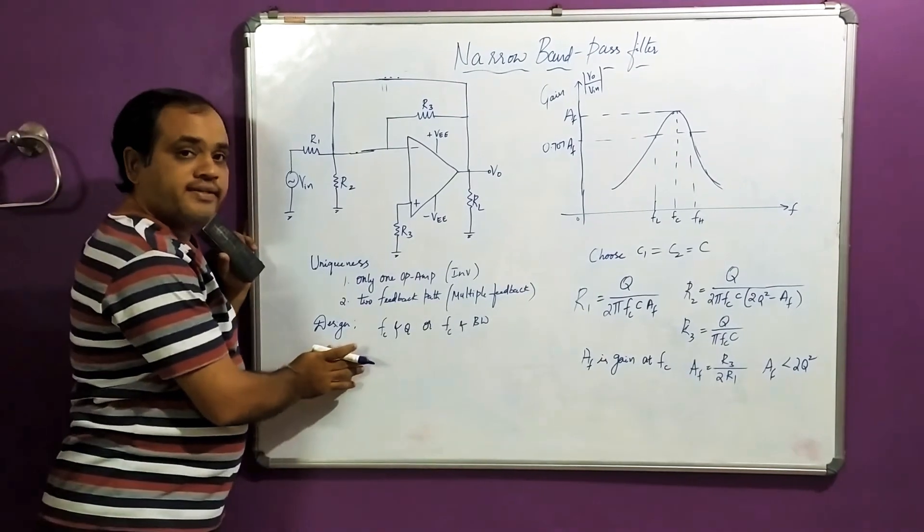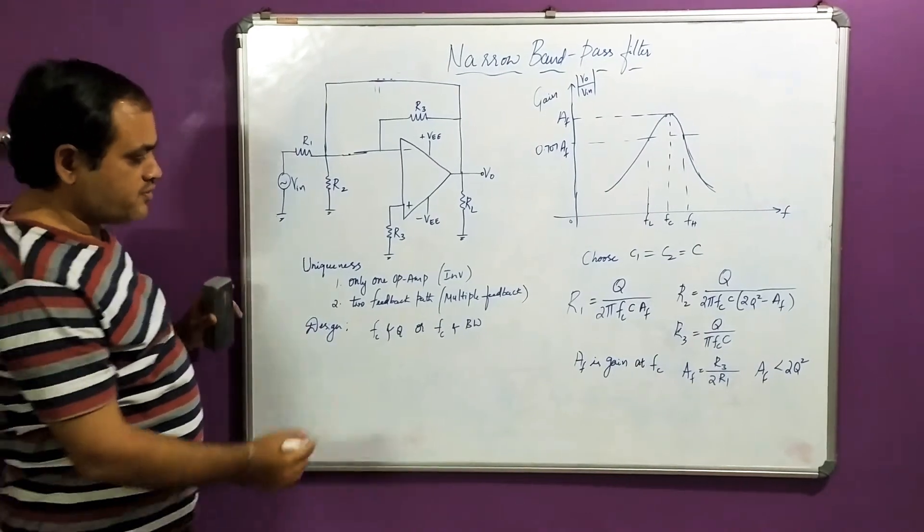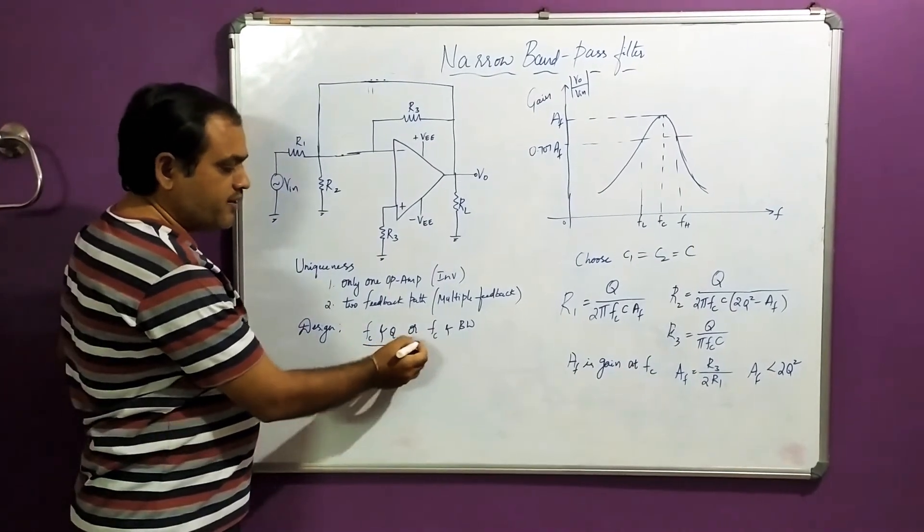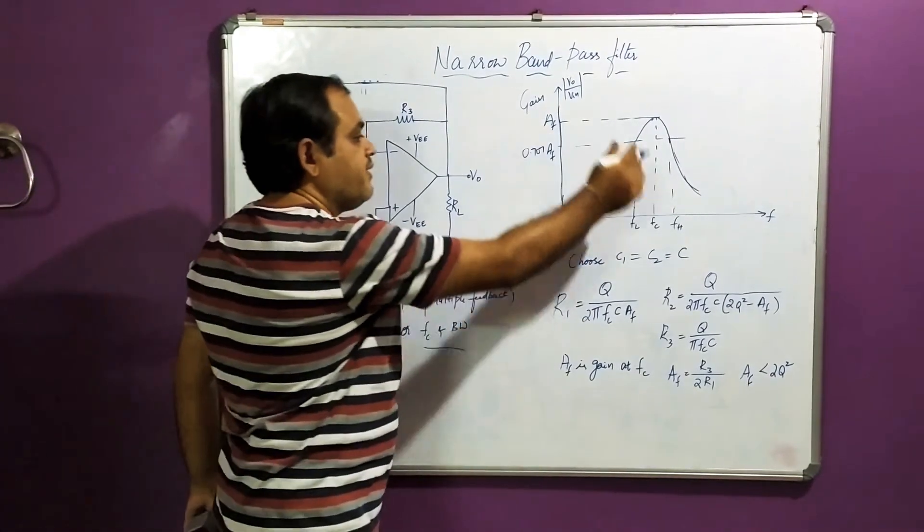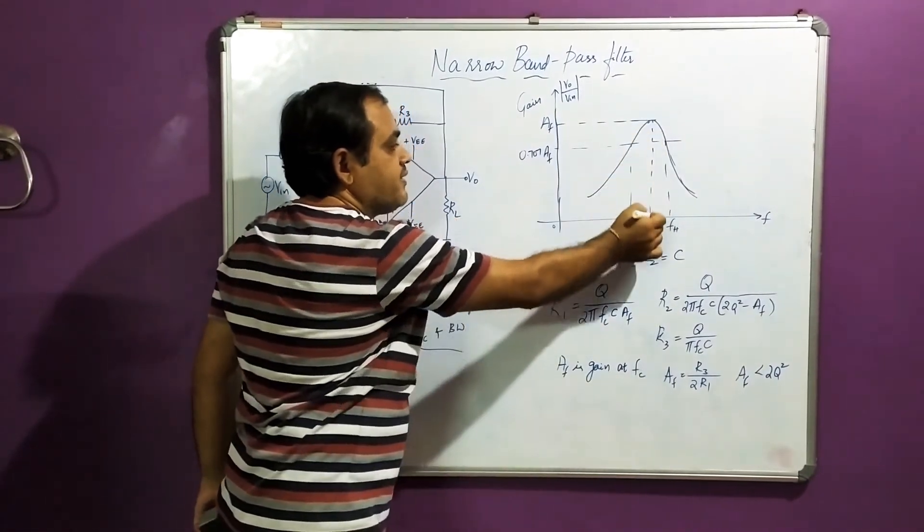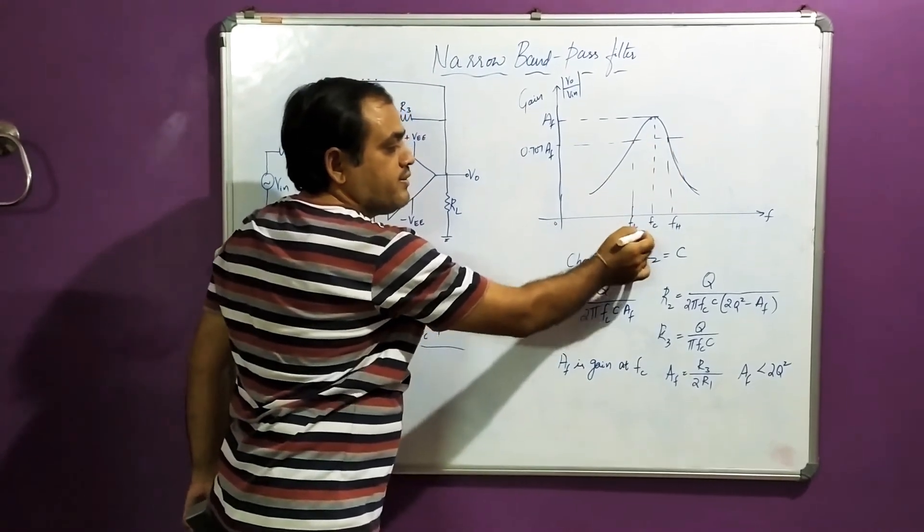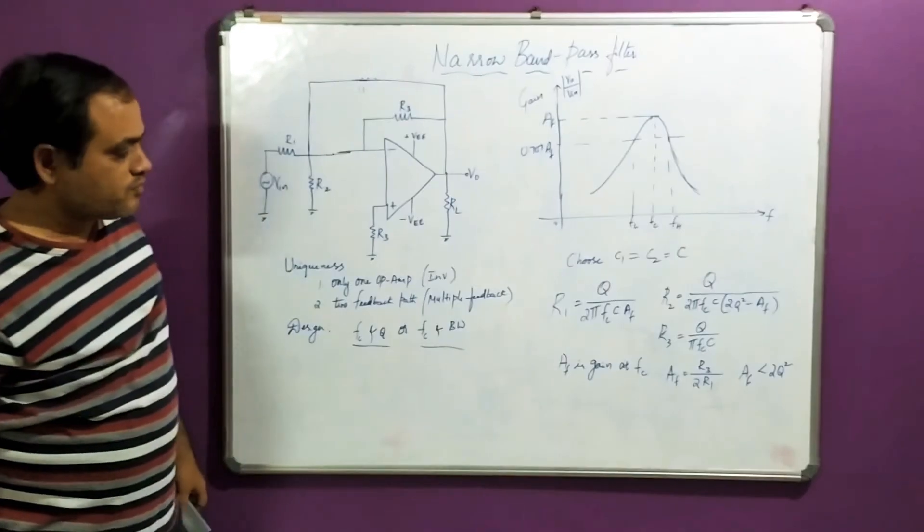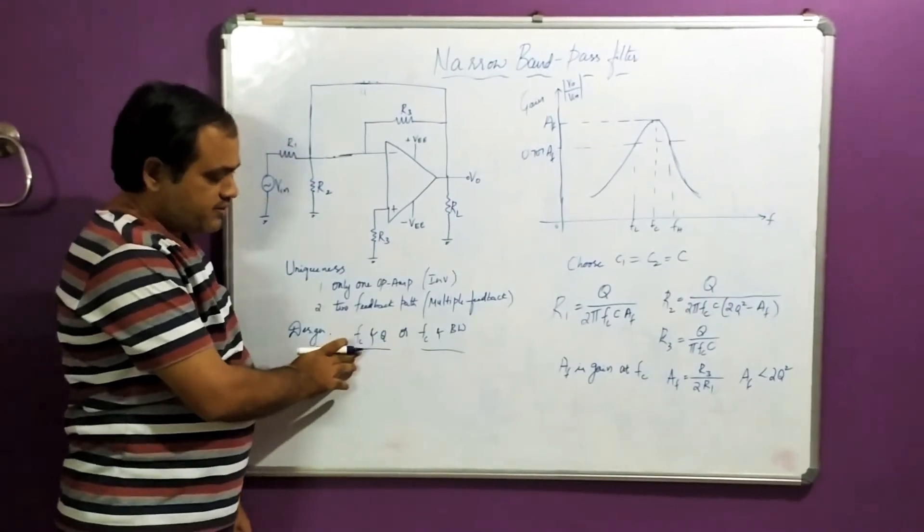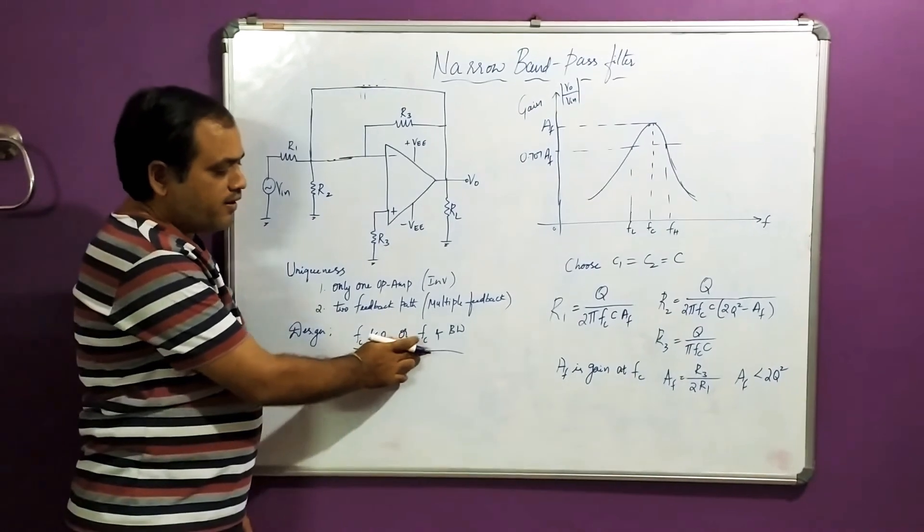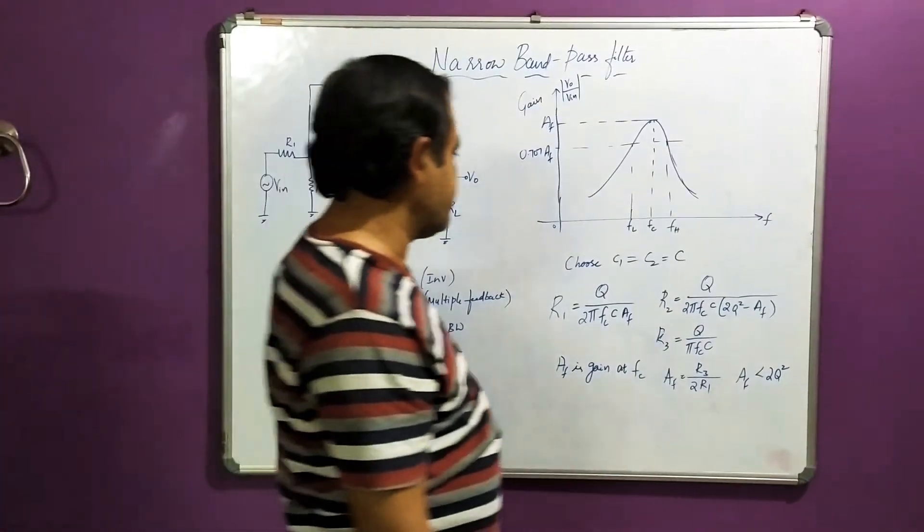As far as design is concerned, the design is entirely dependent on specific values called Fc and Q, or Fc and bandwidth. You can observe here I am having Fc as center frequency, the bandwidth between two cutoff frequencies Fl and Fh. Now you know what is Q, that is figure of merit. We have already discussed that.